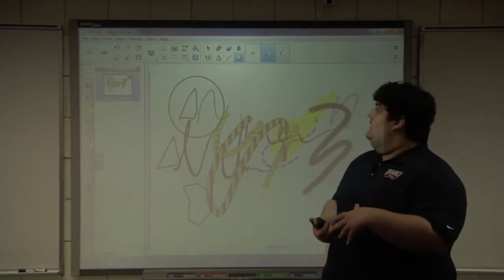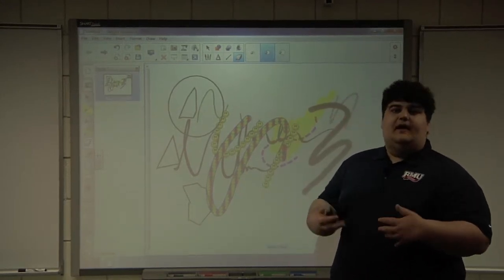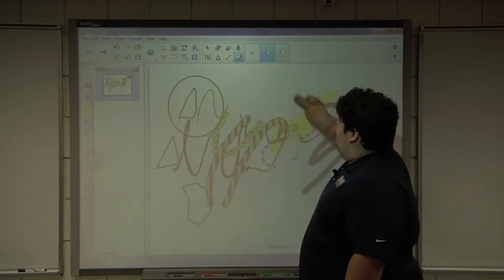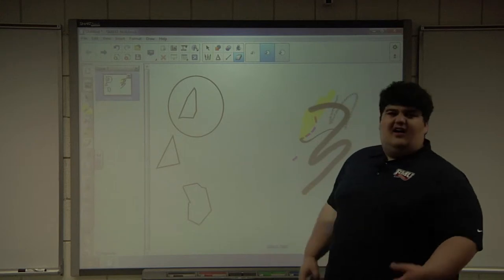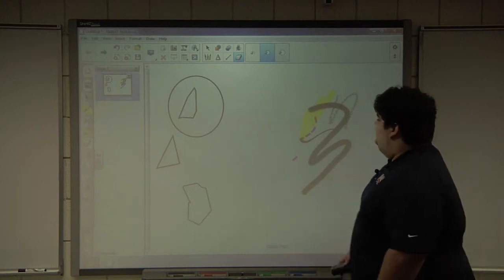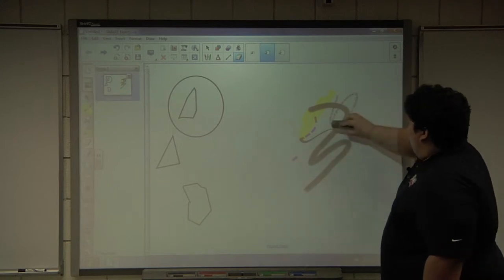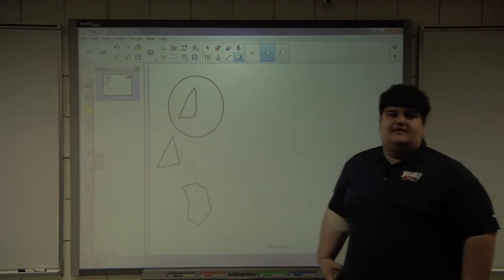And one of the coolest functions of this eraser tool on the smart board is what I call the circle tap. If you draw a circle around the stuff you want to erase and then tap in the center of it, all these annotations will disappear. So we'll do it again on this side. Circle around it, tap in the middle, all that stuff is gone.